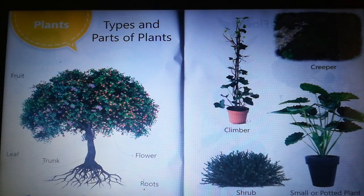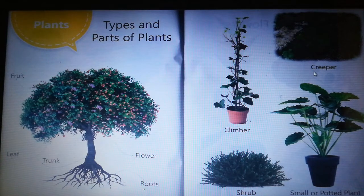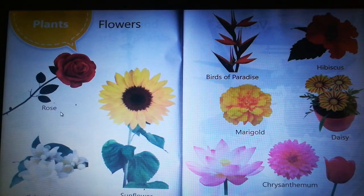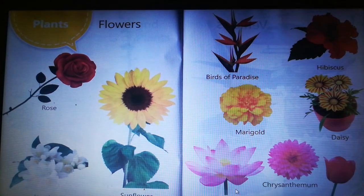Plants — types and parts of plants: fruit, leaves, trunk, flowers, roots. Overall it is a tree. Also climbers, creepers, water plants. Flowers: rose, jasmine, sunflower, birds of paradise, marigold, hibiscus, daisy, lotus, tulip.